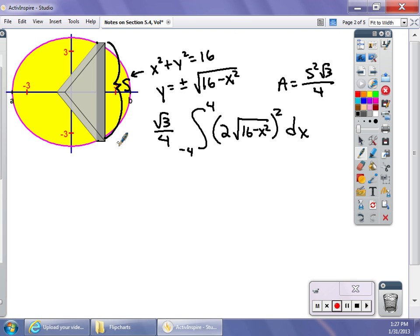The only difference I would have if these equilateral triangles were perpendicular to the y-axis is I would have solved this for x equals in terms of y because y would need to be my variable of integration. We'll look at those in class a little bit because I don't have any example of those.